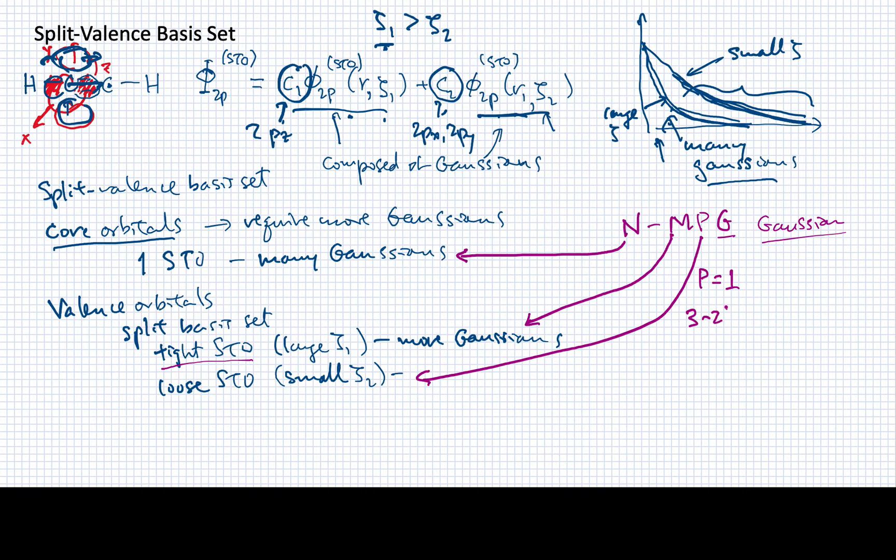What might a typical basis set like this be labeled? For example, the 3-21G basis is one that you might encounter. It gives moderately good results, but not the best. This means all the core Slater type orbitals will have three Gaussians. The dash tells us it is a split valence orbital. The two tells me the tighter orbital will be represented by two Gaussians, and the loose orbital will be represented by a single Gaussian. This way we get a lot of information from this label.